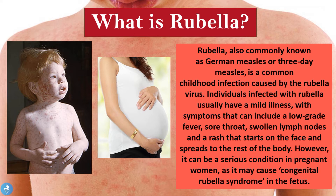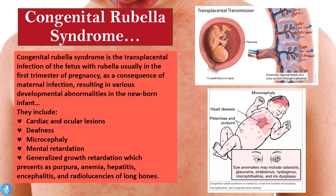Now that we know the basics of rubella, let's take a closer look at congenital rubella syndrome. Congenital rubella syndrome is the transplacental infection of the fetus with rubella, and usually occurs in the first trimester of pregnancy as a consequence of maternal infection. This results in various developmental abnormalities in the newborn, including cardiac and ocular lesions, deafness, microcephaly (a very small brain), mental retardation, generalized growth retardation presenting as purpura, anemia, hepatitis, encephalitis, and radiolucencies of the long bones.